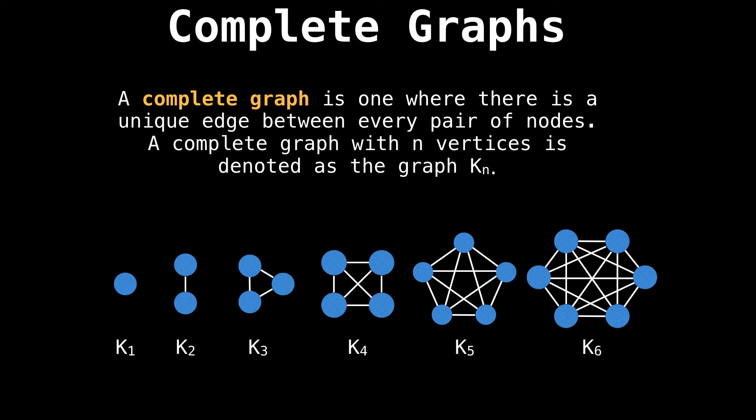This last type of graph is a complete graph. It is one where there is a unique edge between every pair of nodes in the graph. A complete graph with N vertices is denoted as the graph K sub N. I have listed K1 through K6 on the bottom and you can easily see how this scales when we add more nodes. Complete graphs are often seen as the worst case possible graph you can possibly encounter because of how many edges there are. So if you want to test your algorithm for performance, a complete graph is an easy way to start.